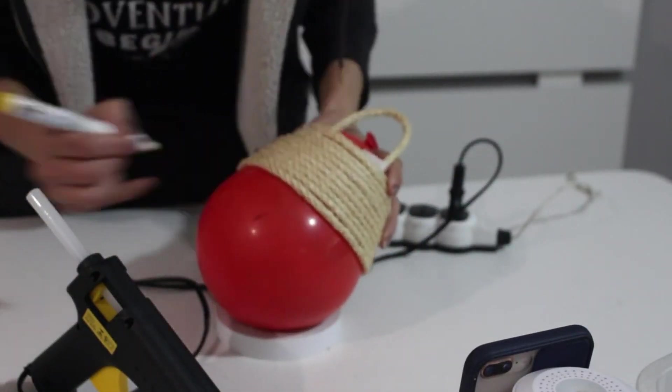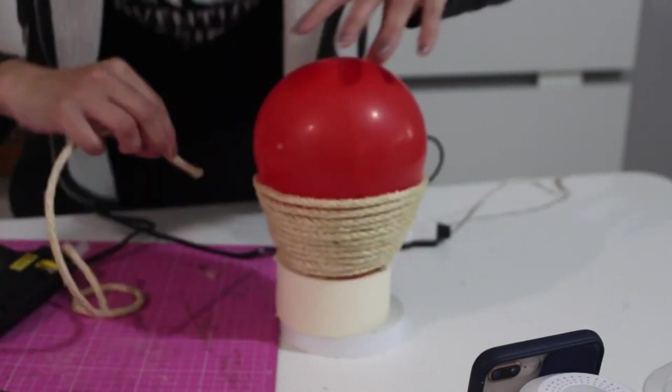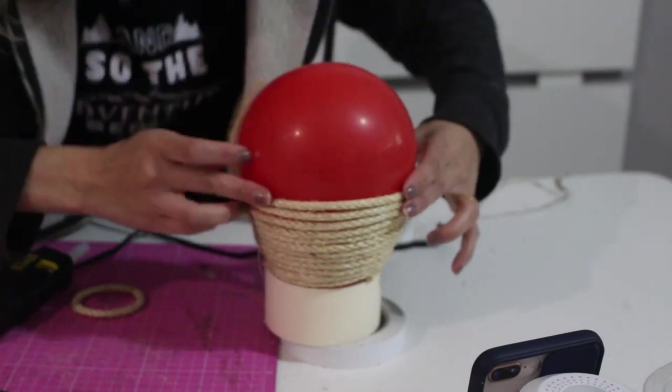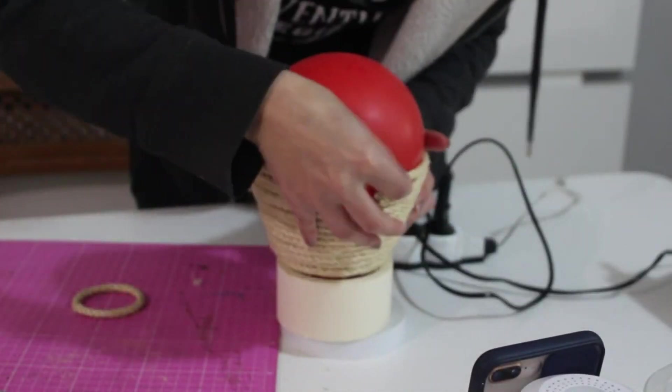I did this until the end of the balloon, gluing round one line of string after the other, and this is where I'm going to glue on my beehive entrance right here.